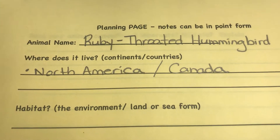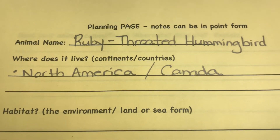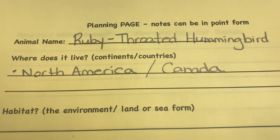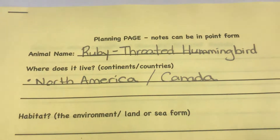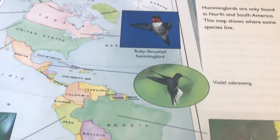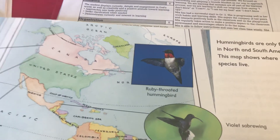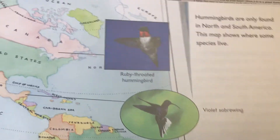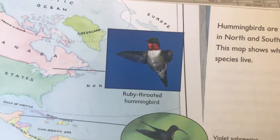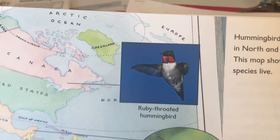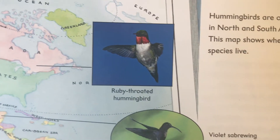The animal I chose was the ruby-throated hummingbird, and I have a book I'm getting information from. I think my pink group will recognize this book because we use it in our reading group.